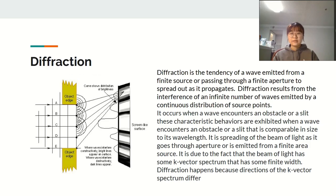It is due to the fact that the beam of light has some k-vector spectrum that has some finite width. Diffraction happens because directions of the k-vector spectrum differ.